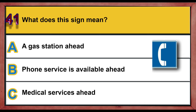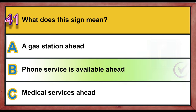Question 41. What does this sign mean? A. A gas station ahead. B. Phone service is available ahead. C. Medical service is ahead. Correct answer is B: Phone service is available ahead.